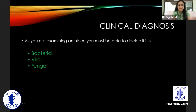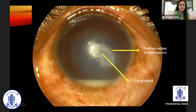Slit lamp biomicroscopy should not only include the cornea, but also lid closure, conjunctiva, the presence of cells in the anterior chamber and anterior vitreous, and also look at the sclera for any involvement. Clinical diagnosis can be made empirically — whether it's bacterial, viral, or fungal — based on the clinical characteristics of the ulcer.